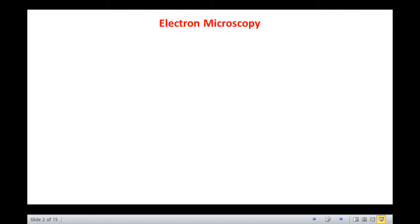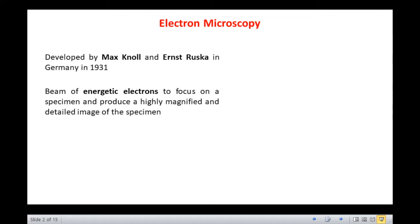Electron microscopes were developed by Max Knoll and Ernst Ruska in Germany in 1931. These are instruments which use a beam of energetic electrons to focus on a specimen and produce a highly magnified and detailed image of the specimen. As a result of the short wavelength of the electrons, the resolution obtained is very high.